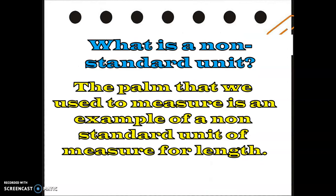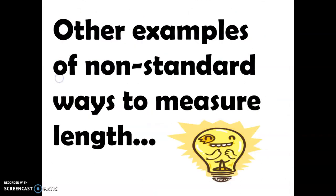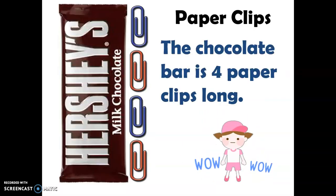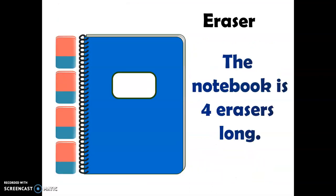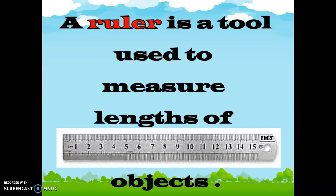Using our palms is what we call a non-standard unit to measure length. The palm is an example of a non-standard unit of measure for length. There are other examples of non-standard ways to measure length, like paper clips — the chocolate bar is four paper clips long, just like what you see in the picture. Another example is your eraser — the notebook is four erasers long.